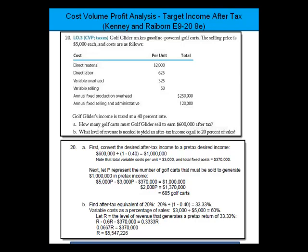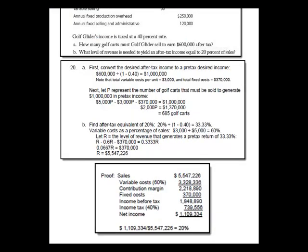Let's prove that number. If sales equal $5,547,226, variable cost would be 60% of that — you could also solve this in Excel by laying it out and filling in what you know, then working backwards to find the unknown. You didn't know what sales were, but you knew variable costs had to be 60% of it, meaning contribution margin is 40%. Fixed costs are $370,000, and income tax is 40% of pre-tax income.